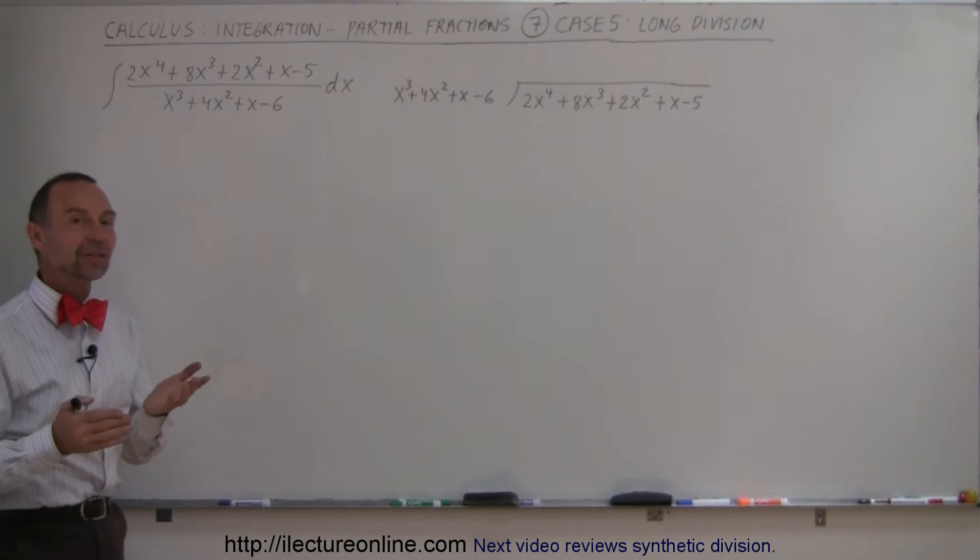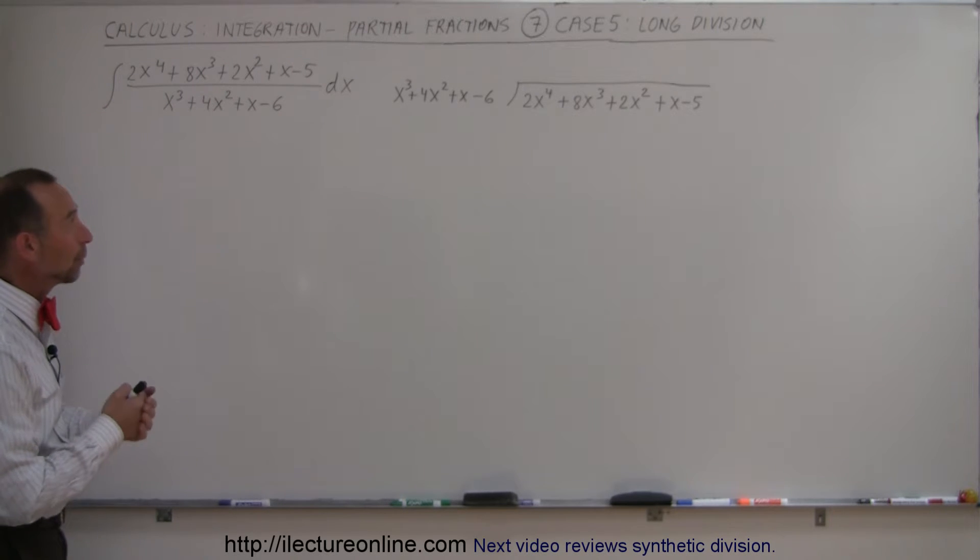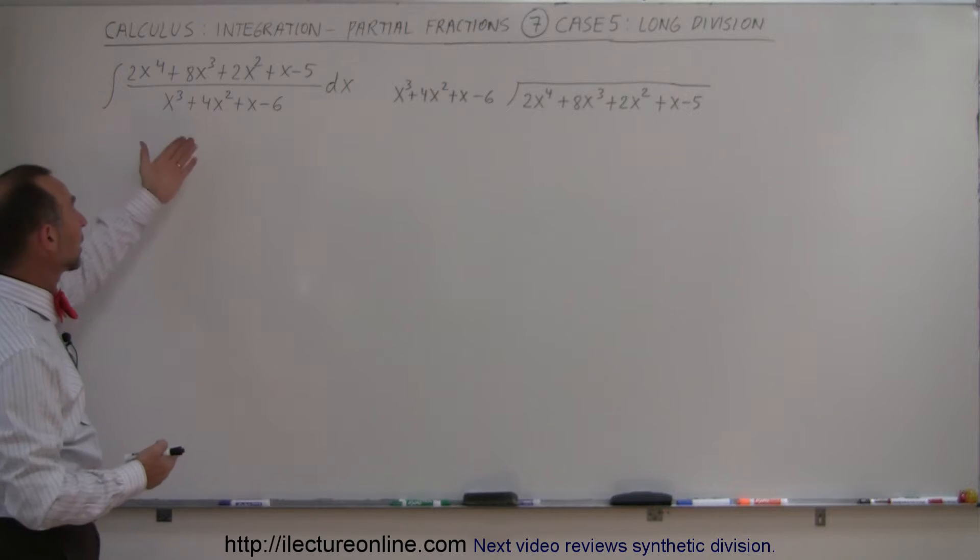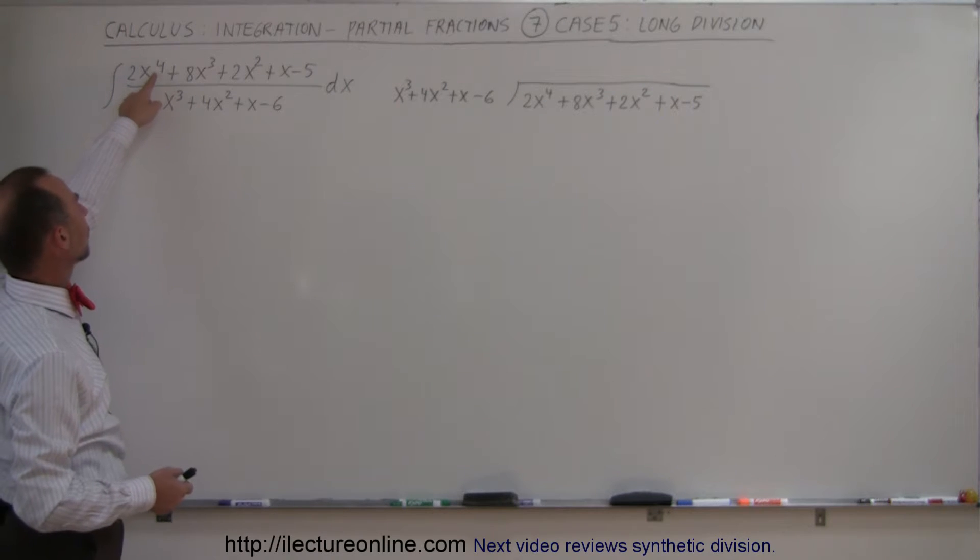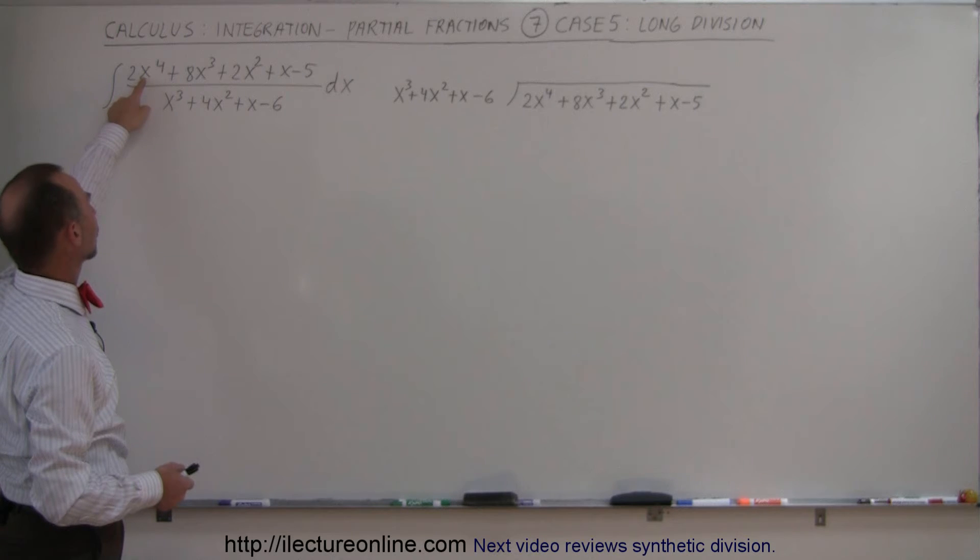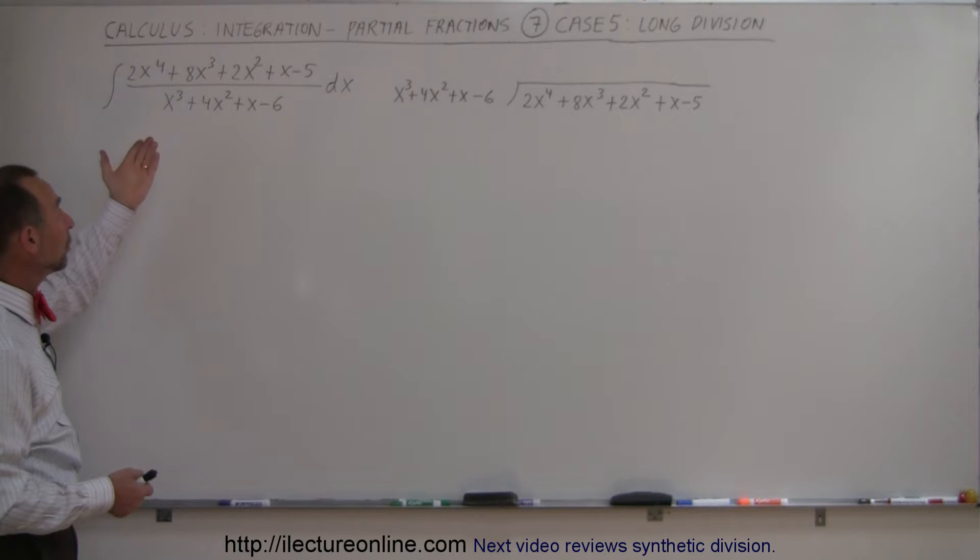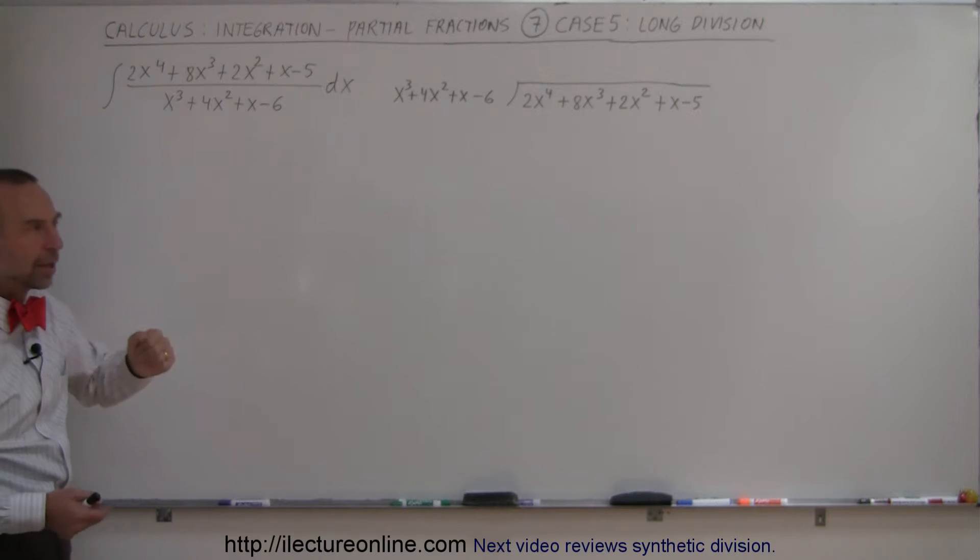Here is the last of the five different types of cases that we might run into when we try to do partial fractions on something that looks like this. In this case, you should have noticed that the exponent on the x here in the first term is to the fourth power. Here's to the third power. That means the order in the numerator is larger than the order in the denominator, which means we probably want to do long division first.